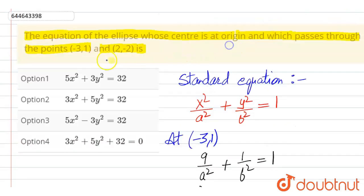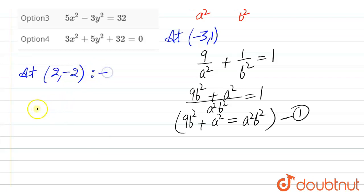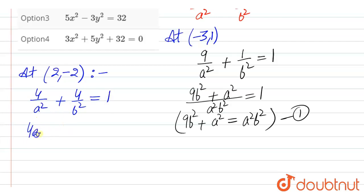Now we put the second point, (2, -2). The equation becomes: x² that is 4 divided by a² plus 4 divided by b² is equal to 1. So, 4a² + 4b² = a²b². This is equation number 2.